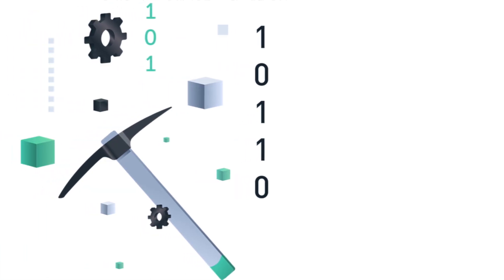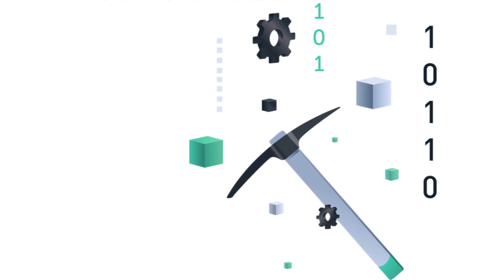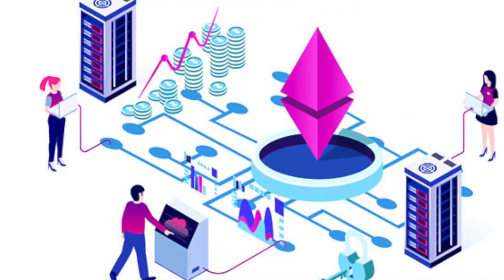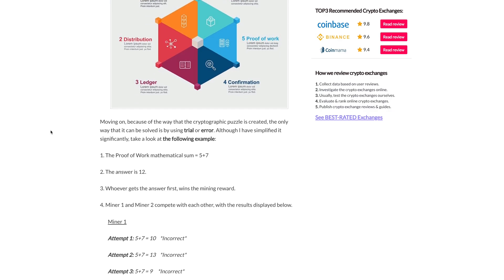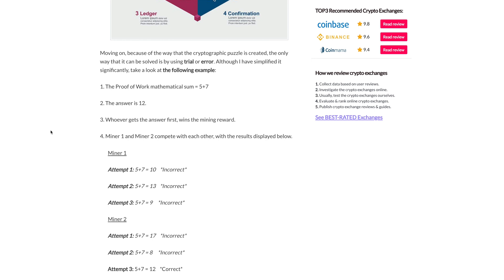Let's begin with how transactions are verified in proof of work. There's the famous term known as mining. How this works is computers in the network solve mathematical problems, which use a lot of electricity. The computer that solves the problem the fastest is deemed the winner for the blockchain and is rewarded. This is called mining, and this is how Bitcoin and other proof of work cryptocurrencies work.